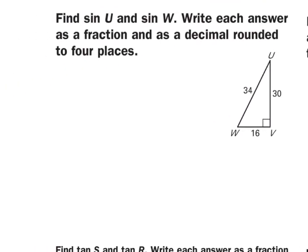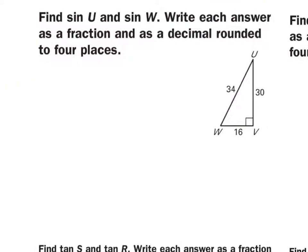Taking a look at our first example, we have a triangle. Please notice it is a right triangle — we have to have a right triangle; we're talking about right triangle trigonometry. We have our right angle, so we know which side is our hypotenuse — it's the side opposite that right angle. We're going to find the sine, cosine, and tangent of angle U for practice.